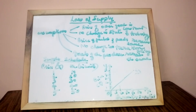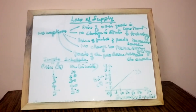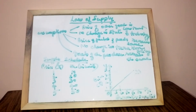The law does not indicate the magnitude of change, and it does not establish any proportional relationship between change in price and the resultant change in quantity supplied. The law is also one-sided, as it explains only the effect of change in price on supply, not the effect of change in supply on price.